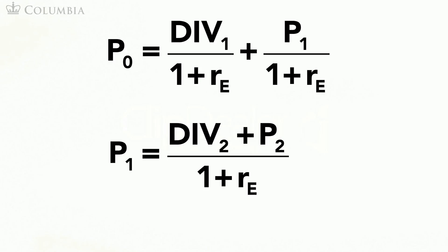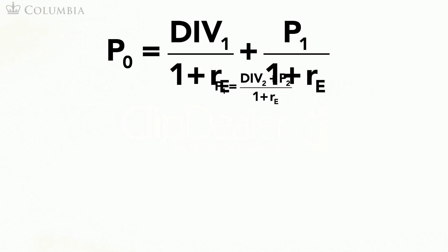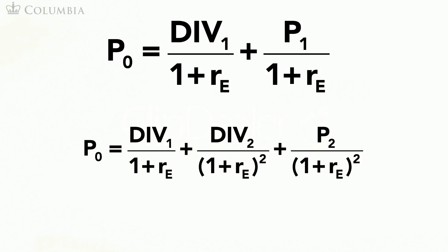We can now plug the formula for P₁ into the formula for P₀ to obtain the following. Now we no longer have P₁, but we have a similar problem as we do not know the price of the stock in year 2, or P₂.